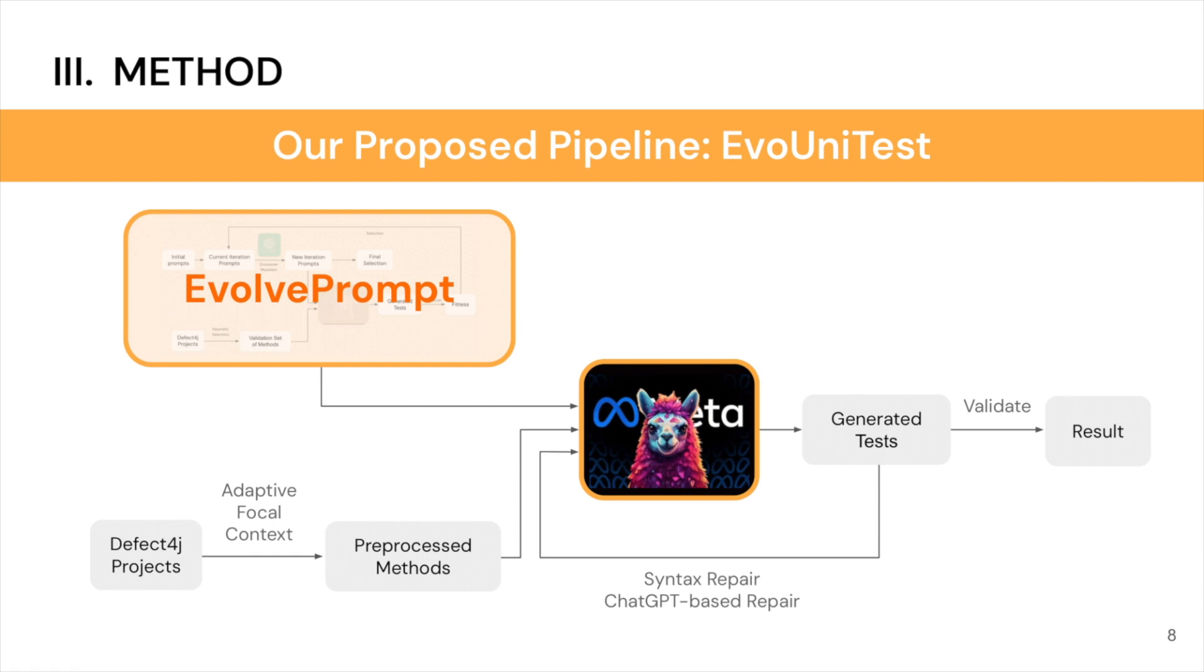This is our proposed pipeline, EvoUnitTest, where we introduce a new component called EvoPrompt, which is our prompt evolution pipeline. We will do prompt evolution first to find the most appropriate prompt,